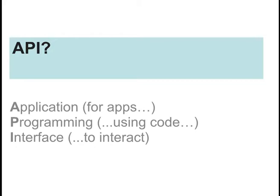So first of all, what is an API? The letters API stand for Application Programming Interface, and basically what it means is an interface — that's the key word here — it's a way for you to interact with some sort of code. In other words, normally as data journalists we use them to interact with a database and get some data.